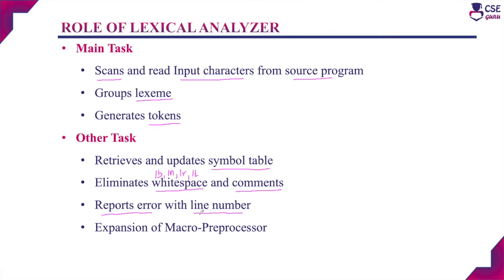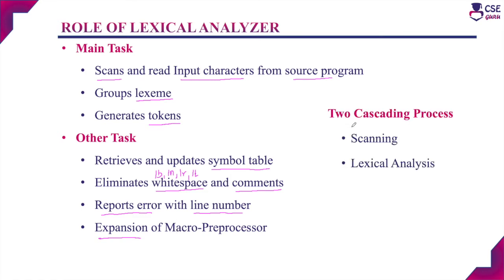This gives the user proper information to rectify the error easily. If there are any macros present in the source code, the expansion of the macro preprocessor is also done by the lexical analyzer. The complete process of the lexical analyzer is a two-cascading process: scanning and lexical analysis. Scanning is a very simple process — it only scans the source code. Lexical analysis is a more complex process: it recognizes lexims and converts them into tokens. The maximum processing is done in the lexical analysis phase, while scanning simply reads the input characters.